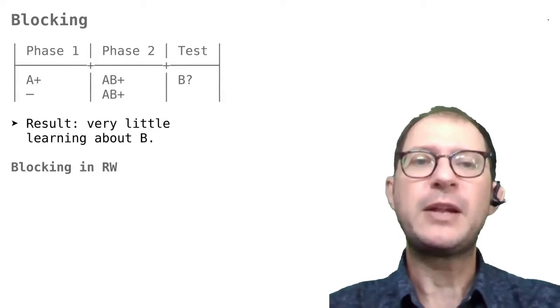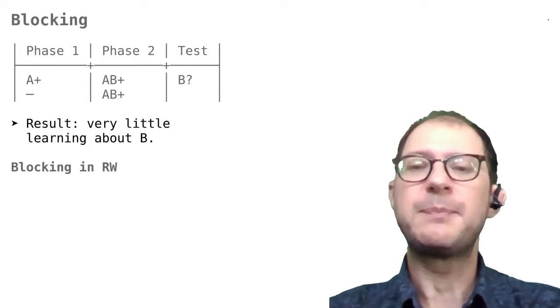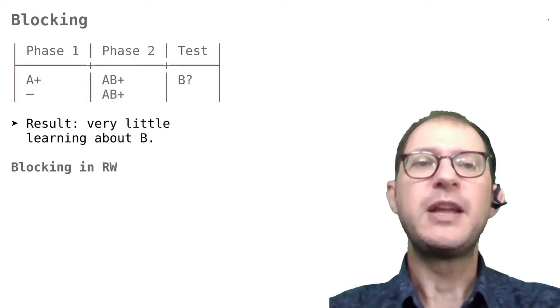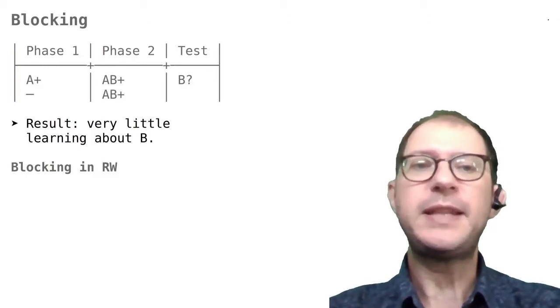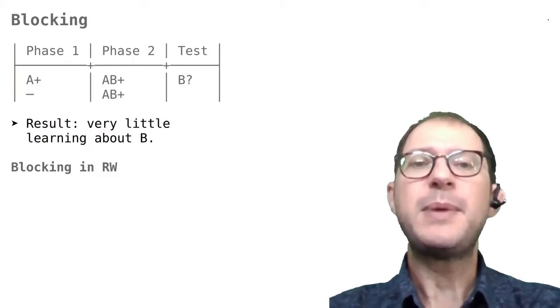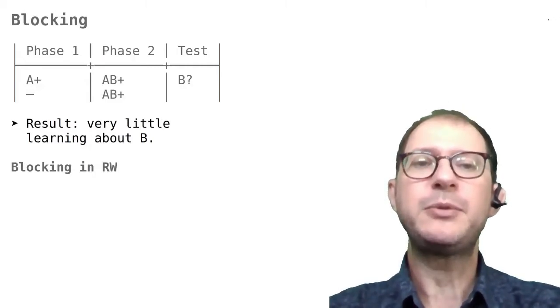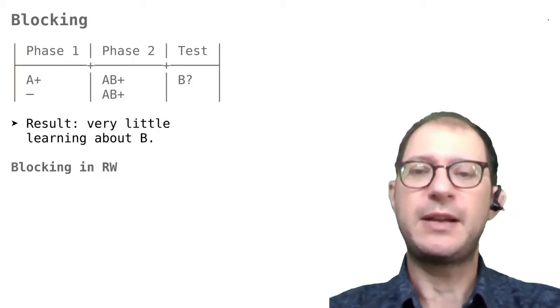The explanation of overshadowing in terms of learning speed was one of the earliest successes of RW. Another one was its explanation of blocking. In our lesson on blocking, we saw that this finding is the fact that previous learning with the stimulus can block learning to another stimulus. The first line of the table here shows the basic experimental design for blocking, where training with A and B together is preceded by training with A alone. This results in little or no learning about B, compared to a control group that is not pre-trained with A. The control group is in the second line of the table.